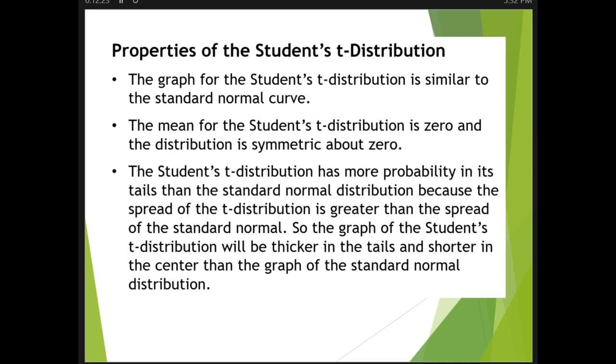The Student's t-distribution has more probability in its tails than the standard normal distribution because the spread of the t-distribution is greater than the spread of the standard normal. So the graph is going to be thicker in the tails and shorter in the center.